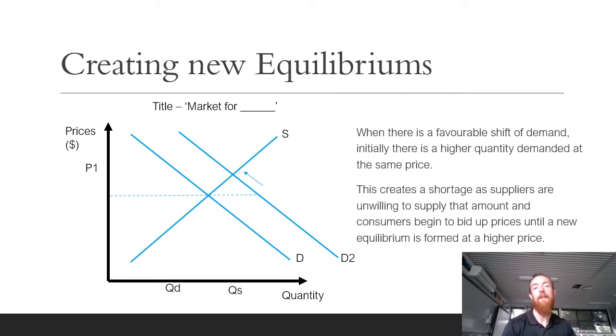In this instance, we've had a favorable shift in demand. Initially, when there's a favorable shift in demand, there's a higher quantity demanded at the same price. You can see here we've moved from the initial equilibrium over to this point. The price is the same, but there's more quantity demanded at the same price.